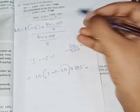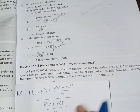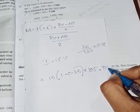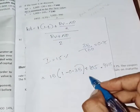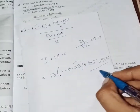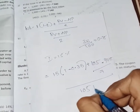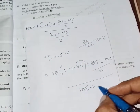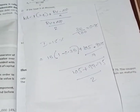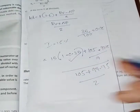So the numerator is: 15 into 1 minus 0.35, plus 105 minus 97.75 divided by 7. The denominator is: 105 plus 97.75 divided by 2, which equals 101.375. Now we calculate: 15 multiplied by 0.65 equals 9.75. Then 105 minus 97.75 equals 7.25, divided by 7 gives 1.035.